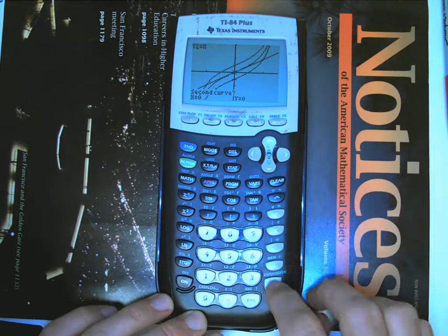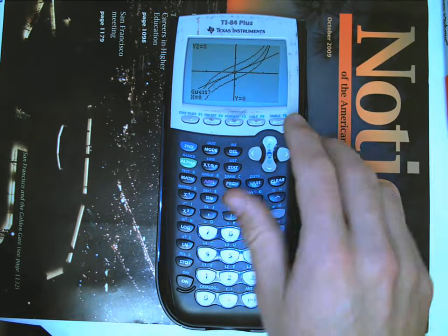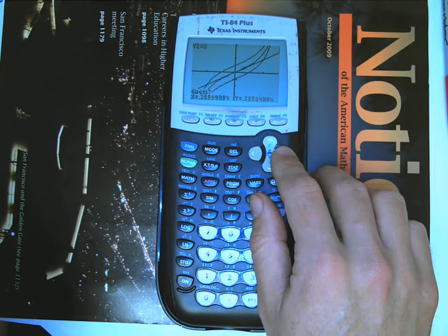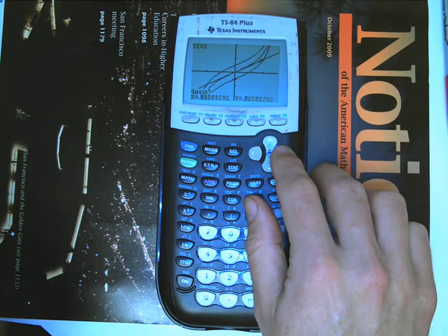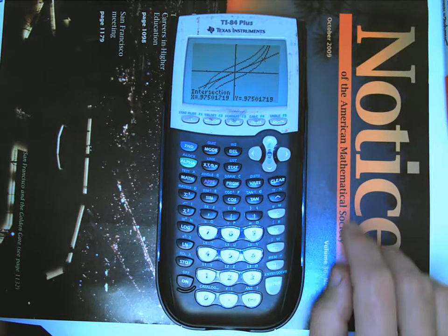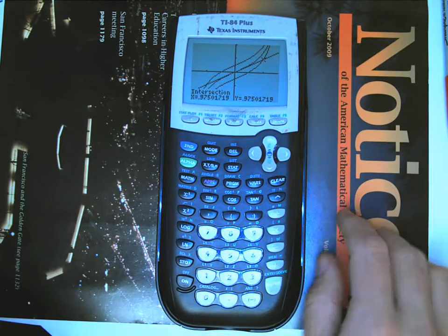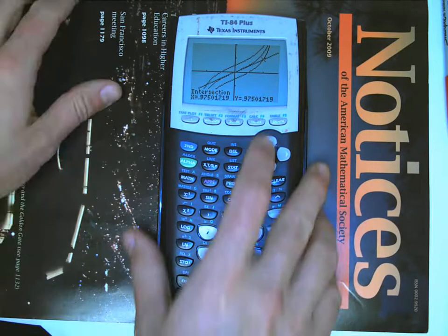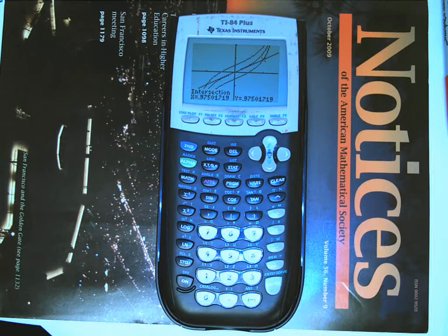And, the guess, I don't want it to guess zero, because that's right in the middle. I want to guess over here. And, it tells us that x is .975. So, at x is .975, just about, almost to one. I'm still within one-half.